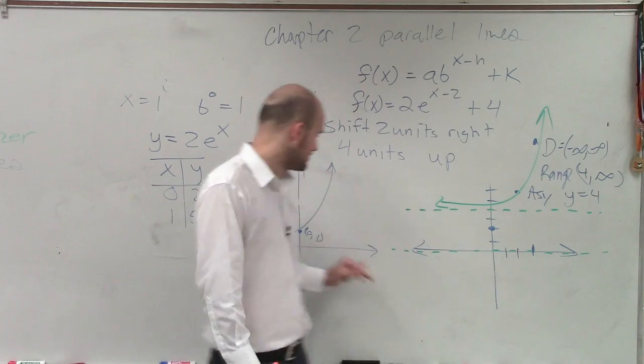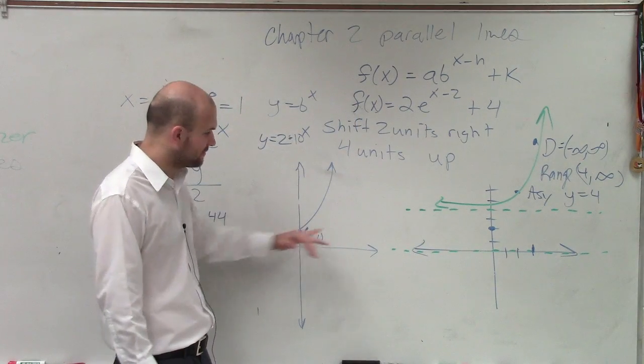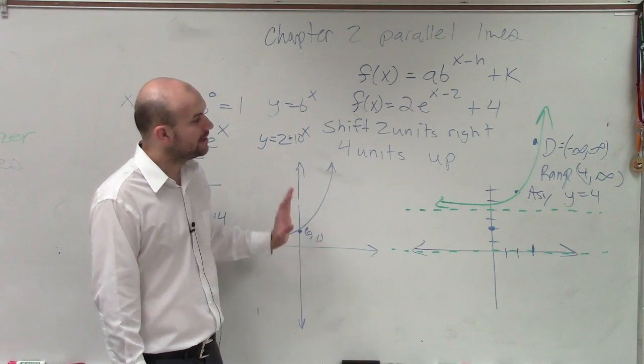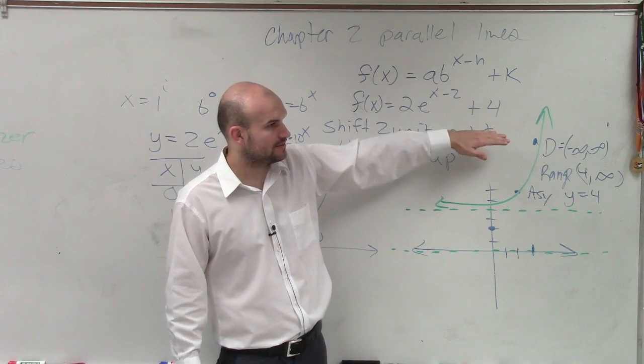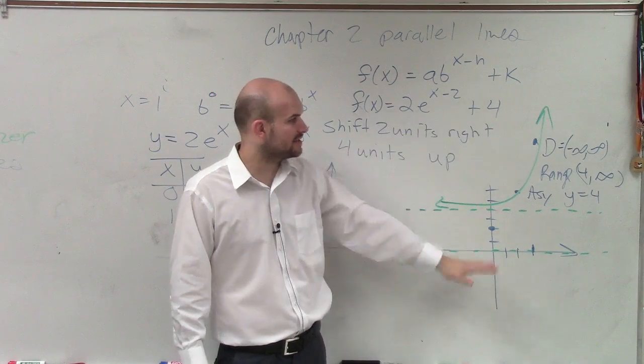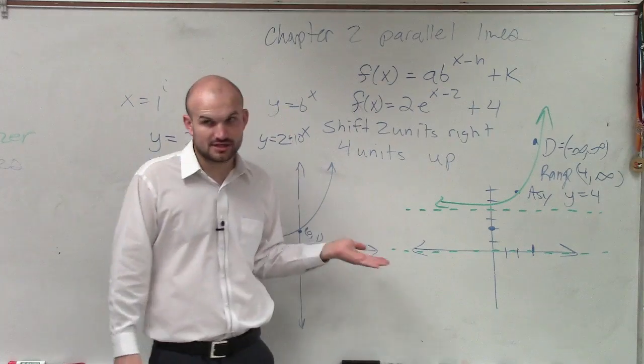So it's just shifted the graph 4 units up. No, the asymptote is always at 0. The asymptote always for the parent graph is at 0. It only changes when I'm shifting up or down with that. So yes, since I moved it up, that's going to change the asymptote.